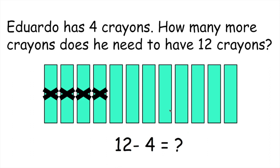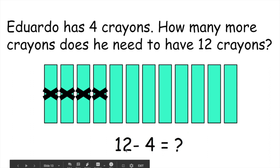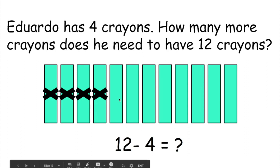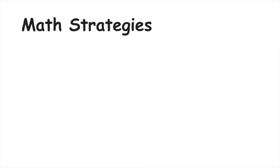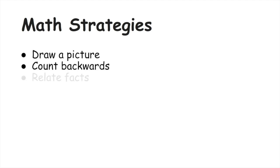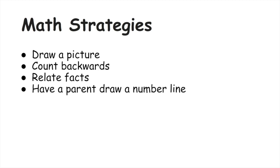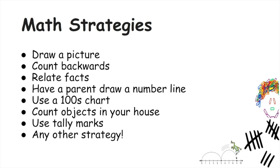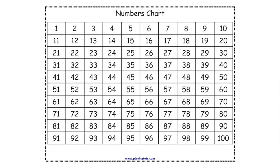So this is what the number problem would look like. We started out with the number 12, then we took away four crayons because Eduardo already had those, and our answer — eight — is what he needs to have in order to get to 12 crayons. You can also use other math strategies to solve this problem, like drawing a picture, counting backwards, relating addition and subtraction facts, using a number line with a parent's help, a hundreds chart, counting objects in your house, or tally marks. Here is a picture of a number chart you can use to help with the subtraction problem.